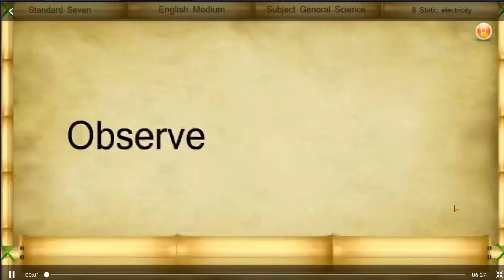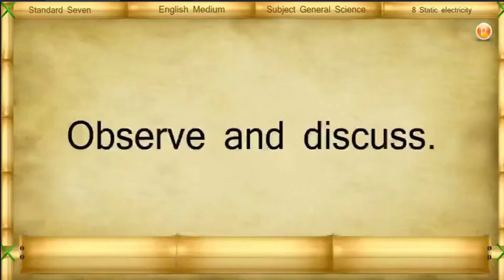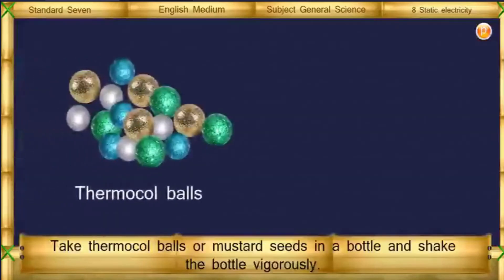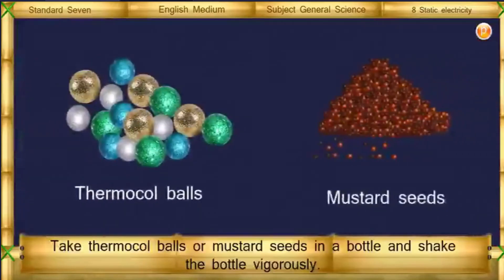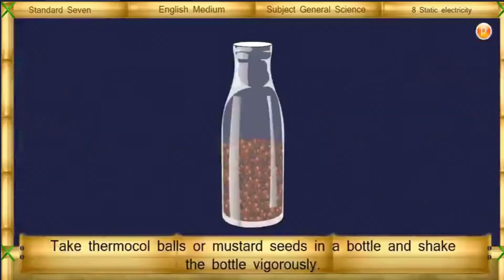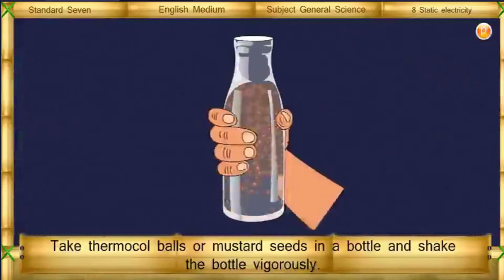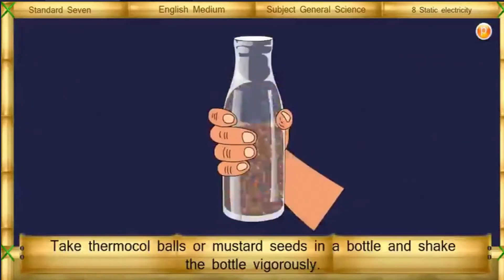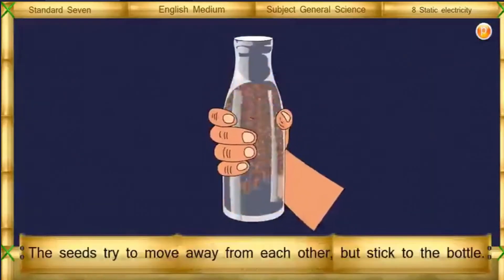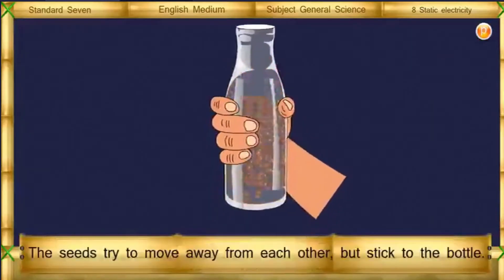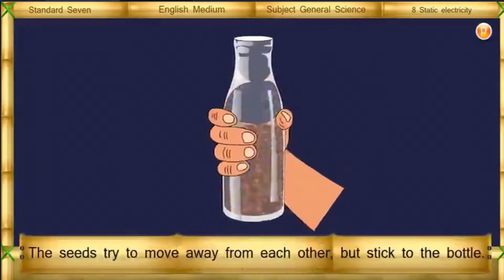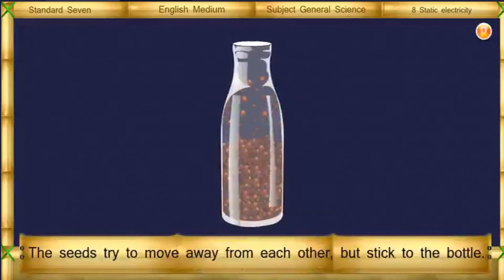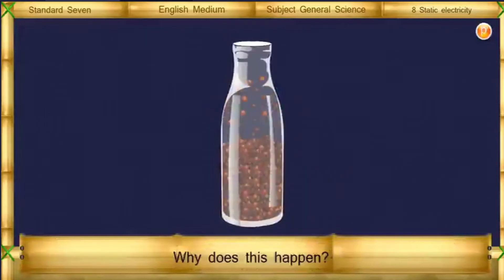Observe and discuss: Take thermocol balls or mustard seeds in a bottle and shake the bottle vigorously. The seeds try to move away from each other but stick to the bottle. Why does this happen?